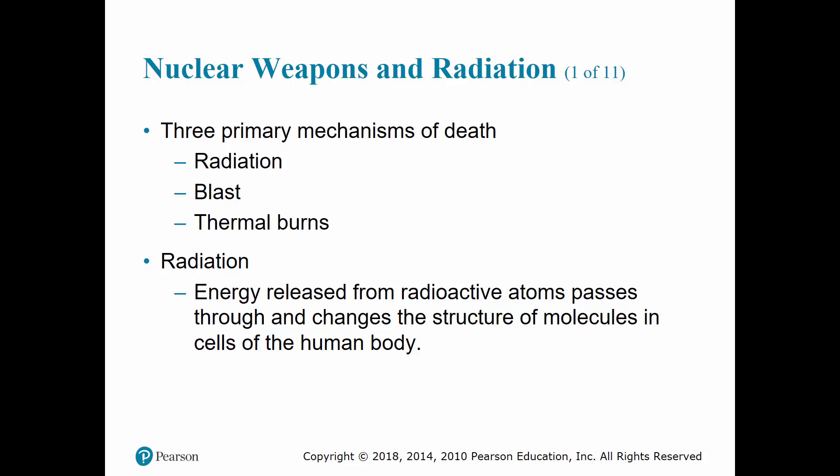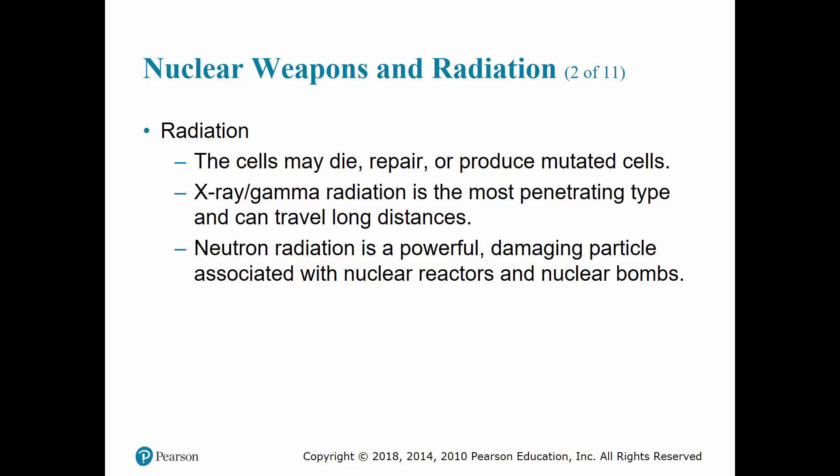Nuclear weapons and radiation have three primary mechanisms of death: radiation, blast, and thermal burns. Radiation is caused by energy released from radioactive material, with atoms passing through and causing changes to the molecular structure within cells. With radiation exposure, cells may die, repair themselves, or produce mutated cells.